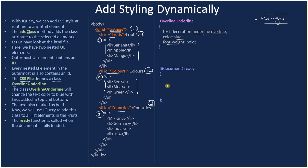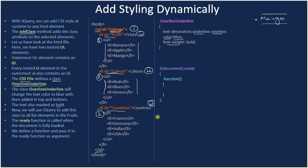When the DOM tree is complete, ready gets called, and inside it you can safely access any HTML element because the DOM tree is fully constructed. We define a function and pass it to the ready function as an argument. Instead of writing the function separately, we define it inline inside the ready function. Finally, we select all child UL elements in the selected parent element.